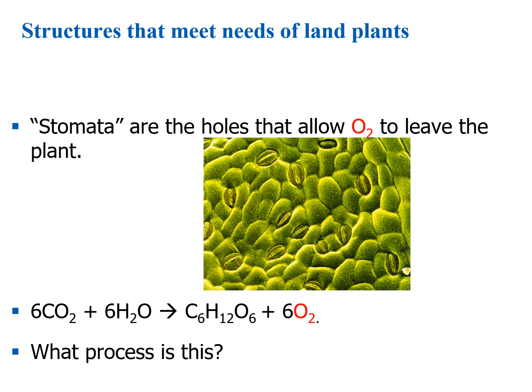Another major adaptation that evolved really early on are the stomata — those little holes that allow oxygen to leave the plant. Take a second to think about what process this is: you get carbon dioxide, add water, and you end up with glucose and oxygen. Hopefully by now you are thinking of photosynthesis.